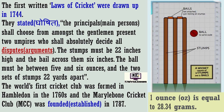Wahaan par jo bhi gentlemen present honge, unke beech mein se woh do umpires ko chunenge. Who shall absolutely decide all disputes — aur ye donon umpires hi, jo bhi disputes honge, arguments honge, unko decide karenge. The stumps must be 22 inches high and the bail across them 6 inches. Stumps ki unchai 22 inch hogi aur stumps ke upar jo bail rakhhe jate hain woh 6 inch lambe honge. The ball must be between 5 and 6 ounces, and the two sets of stumps 22 yards apart. Ball ka wajan 5 se 6 ounce ke beech mein hoga aur pitch ke donon taraf jo stumps hote hain, unke beech mein 22 yard ki doori hogi.